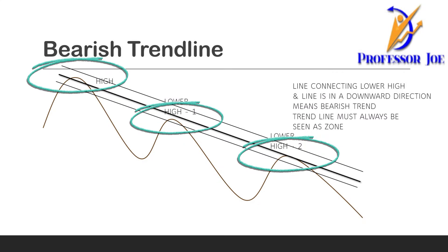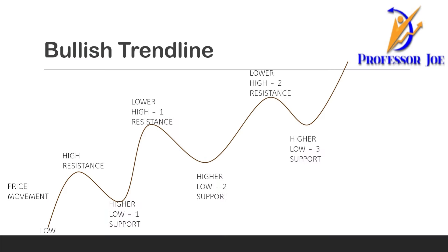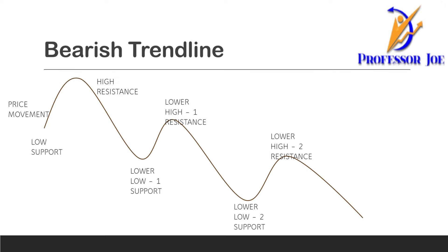In the markets there is nothing like perfection — you always have to learn by looking at the charts. Trend lines also act as support and resistance. In an uptrend you will see that the resistance keeps moving up and the support keeps moving up. In a downtrend or bearish trend, the resistance is moving lower and the support is also moving lower. Basically, trend lines are support and resistance zones within a trend.